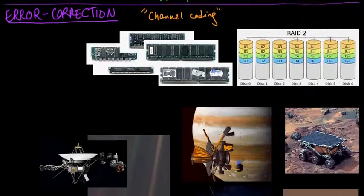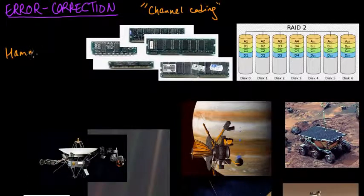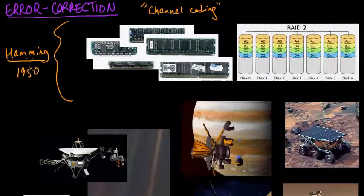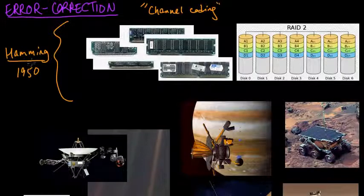What are some examples of error correction codes? Well, there's no other place to start than with Hamming codes. In 1950, Richard Hamming introduced a really elegant family of error correction codes which we now refer to as Hamming codes. Before Hamming, there existed some basic techniques for error correction like parity checks and repetition codes, but they didn't really do a very good job.